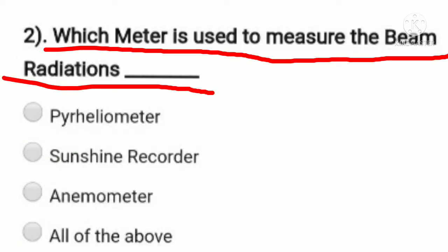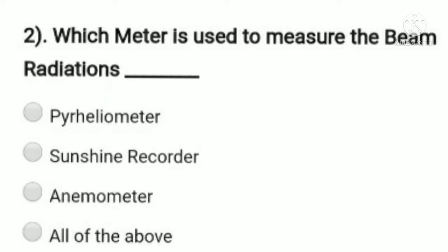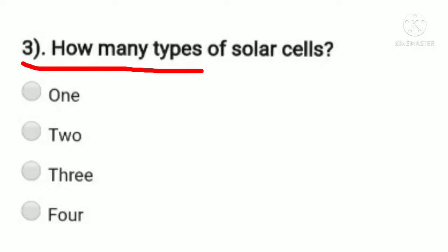Which meter is used to measure the beam radiations? Option A: pyro heliometer, option B: sunrise recorder, option C: anemometer, option D: all of the above. The sunrise recorder does not measure beam radiations, and the anemometer measures wind speed and direction. Only the pyro heliometer measures beam radiations, so option A, pyro heliometer, is the answer.